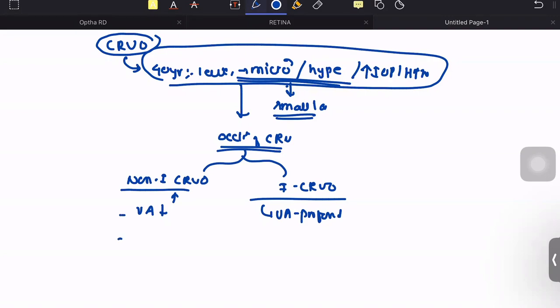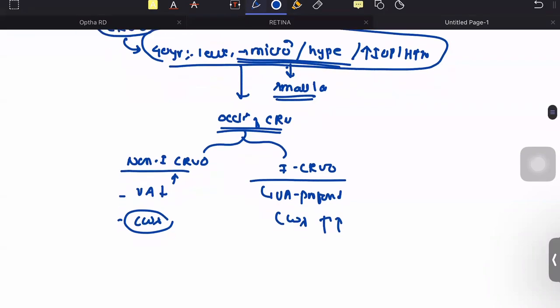On examination, we found cotton wool spots on doing fundus examination in both of them, but the amount of cotton wool spots is more in patients with ischemic variety of CRVO.